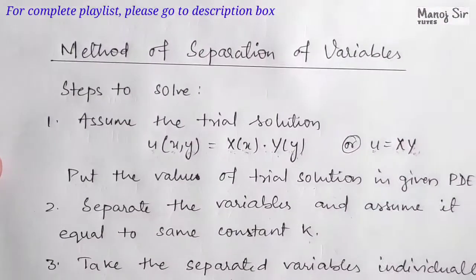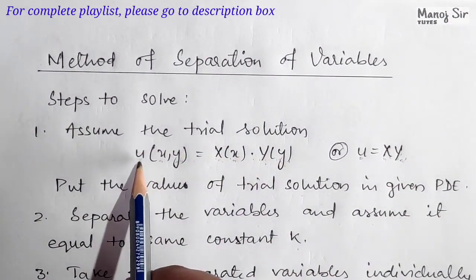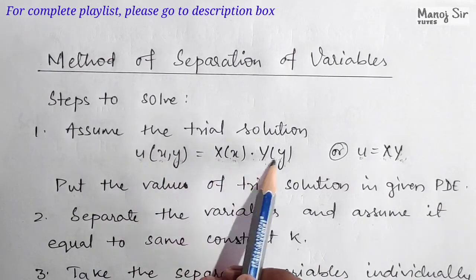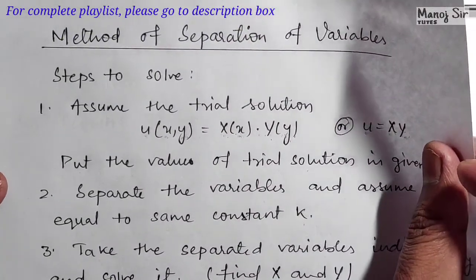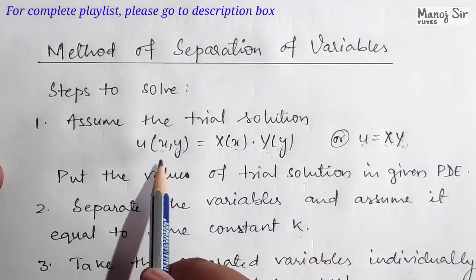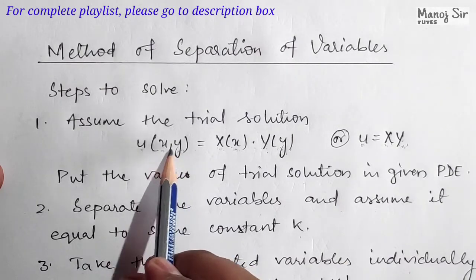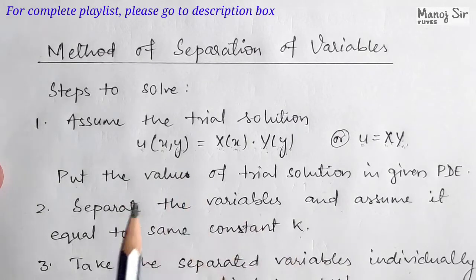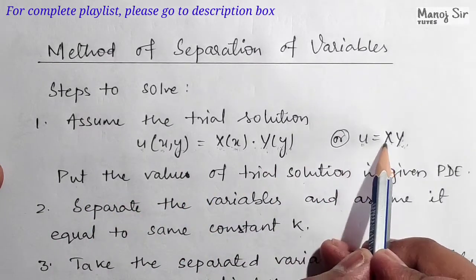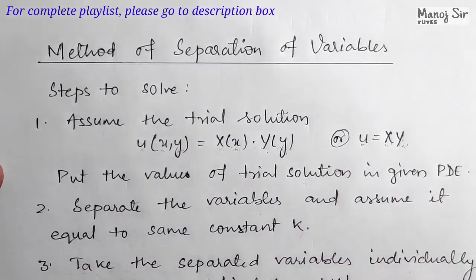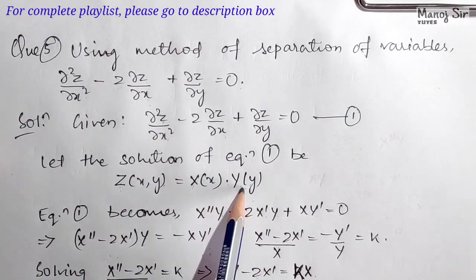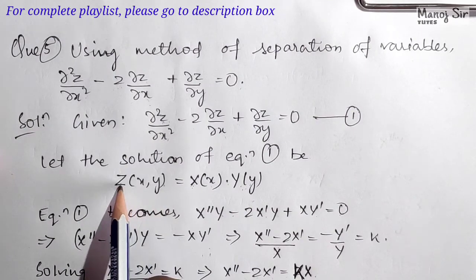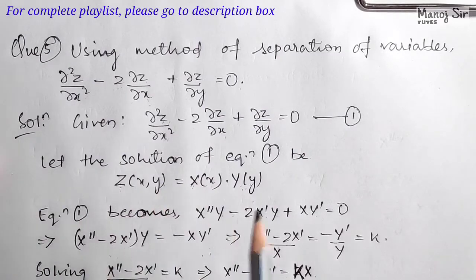The first step is to assume the trial solution. Let z, which is a function of x and y, equal X into Y, where X is a function of x only and Y is a function of y only. Here z is the dependent variable depending on the independent variables x and y. So let the solution of equation (1) be z equals X into Y.